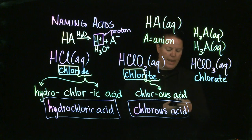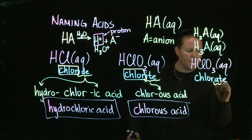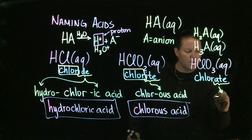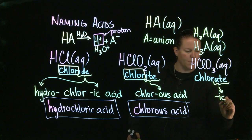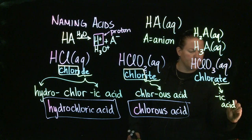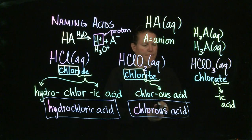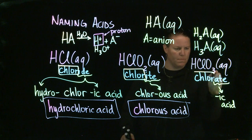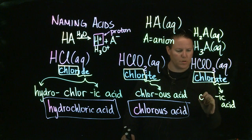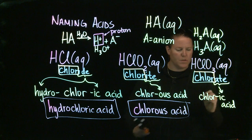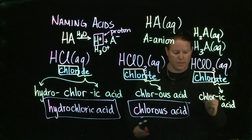And because it's chlorate, ATE endings in acid naming give rise to '-ic.' And then the word acid. What goes in front of '-ic'? Well, the stem. That beginning part. Which makes this chloric acid.